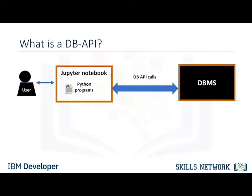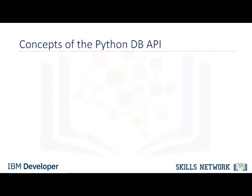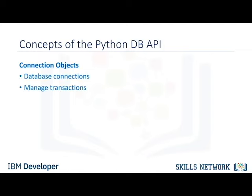DB-API is Python's standard API for accessing relational databases. It is a standard that allows you to write a single program that works with multiple kinds of relational databases, instead of writing a separate program for each one. So if you learn the DB-API functions, then you can apply that knowledge to use any database with Python. The two main concepts in the Python DB-API are connection objects and cursor objects. You use connection objects to connect to a database and manage your transactions. Cursor objects are used to run queries. You open a cursor object and then run queries. The cursor works similar to a cursor in a text processing system where you scroll down in your result set and get your data into the application.